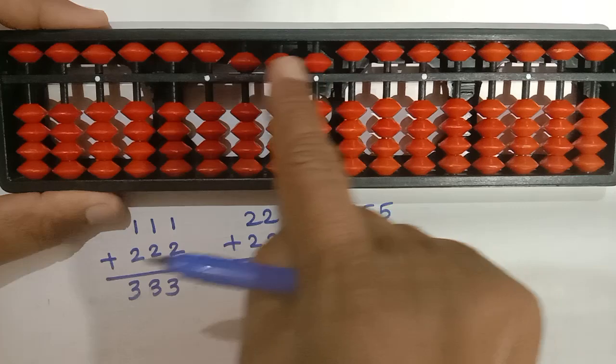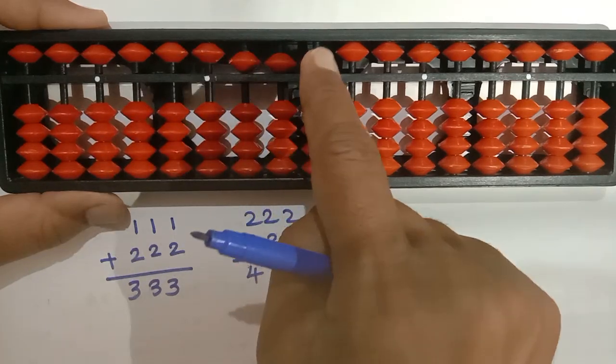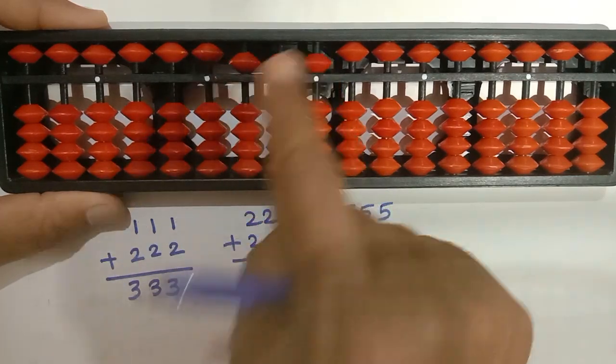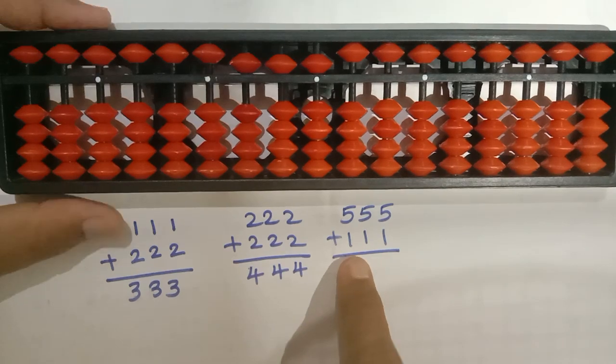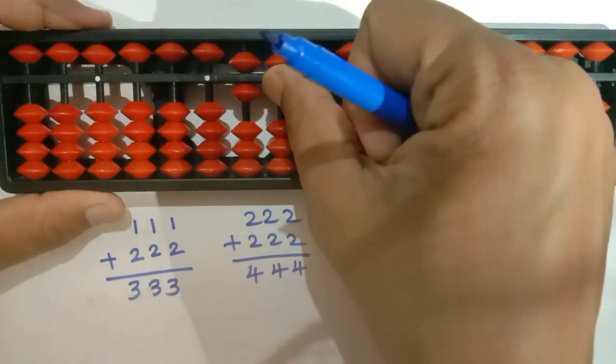The upper bead has a value of 5. So 555. Next, 111.